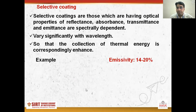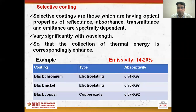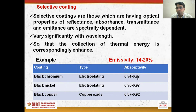In this case, the emissivity is 14 to 20 percent, which is low. Examples of these coatings are black chromium, black nickel, and black copper, and the absorptivity of these coatings is high, approximately ranging from 0.87 to 0.97.